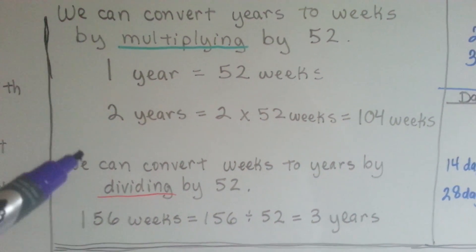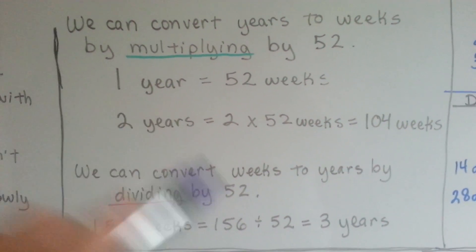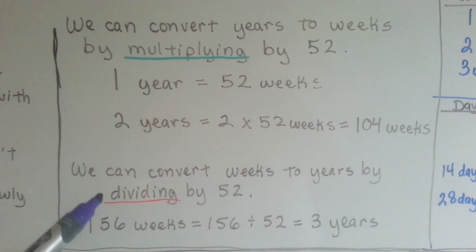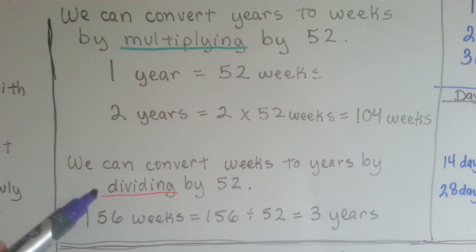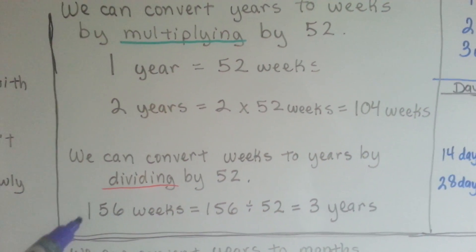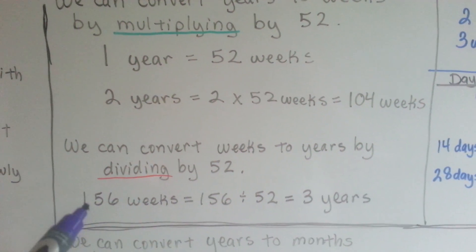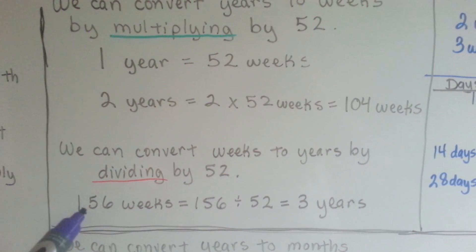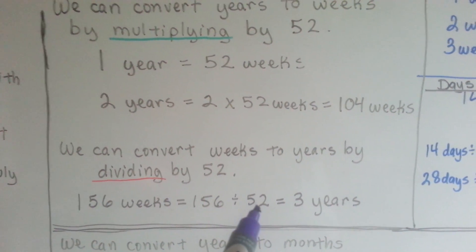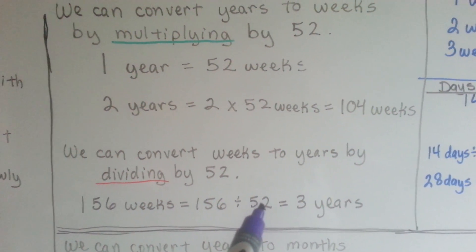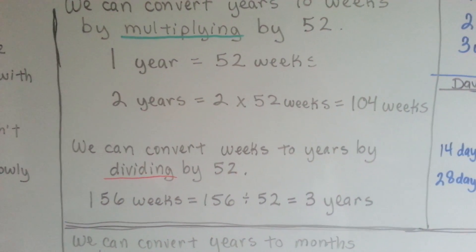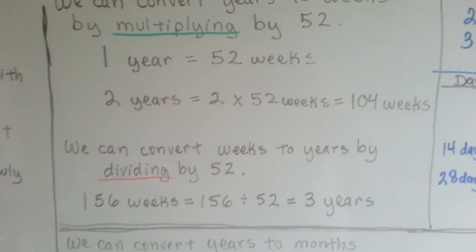We can convert weeks to years the other way around by dividing by 52. So if you had 156 weeks and you wanted to know how many years it was, divide by 52 — that's how many weeks are in a year — and we'd know that it was 3 years.